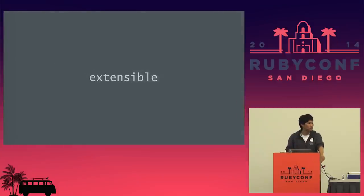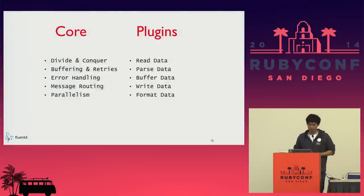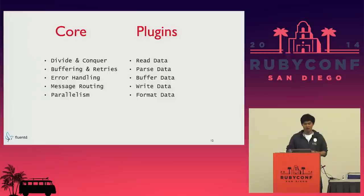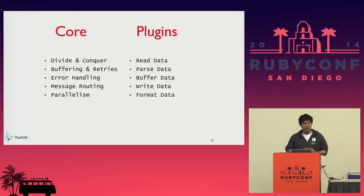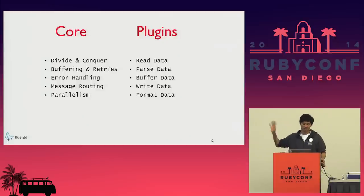The second point is it's extensible. The core philosophy of Fluentd, written by Sato Furuhashi, is that the core program should be reasonably small and should only do the most important things — error handling, message routing, making sure you use all available CPUs. The rest is delegated to users with specific use cases: reading from particular data sources, parsing custom formats, buffering data, writing to destinations, and formatting data.